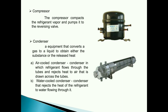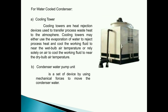The compressor compacts the refrigerant vapor and pumps it to the reversing valve, a device that converts a gas to a liquid to obtain either the substance or the released heat. An air cooled condenser is one in which refrigerant flows through the tubes and rejects heat to air that is drawn across the tubes. A water cooled condenser rejects the heat of the refrigerant to water flowing through it.